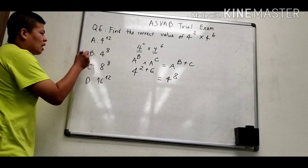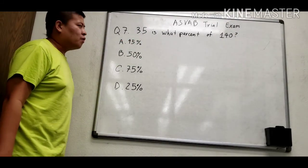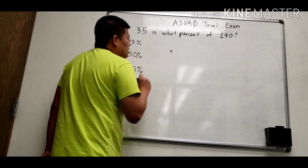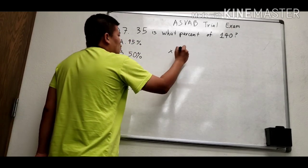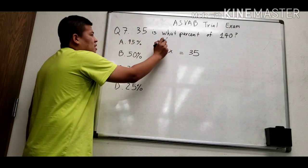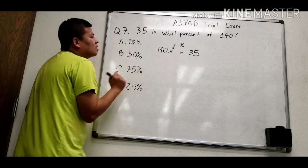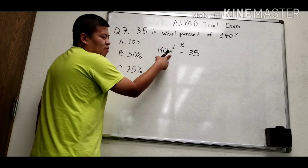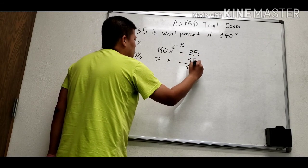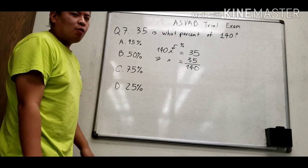Question number 7: 35 is what percentage of 140? We can set up a small equation where x is the number we need to find. To find x, we calculate 35 divided by 140.